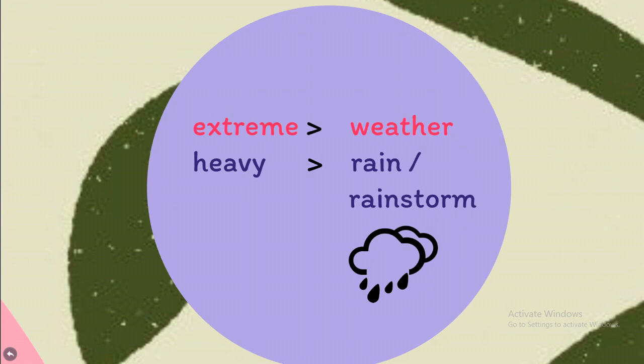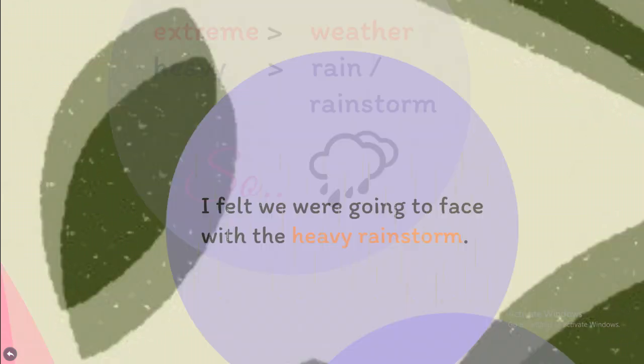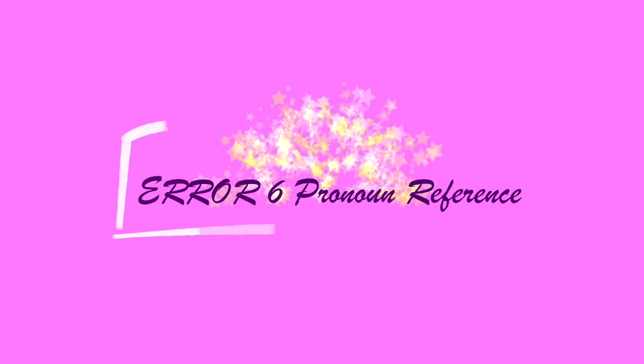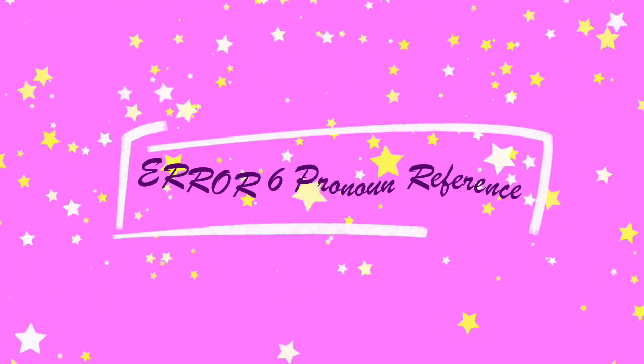However, if we want to use the word 'extreme' in English, we use 'extreme weather.' But for 'rainstorm,' we have to use only 'heavy rain' or 'heavy rainstorm.' So the corrected sentence is: 'I felt we were going to face with the heavy rainstorm.'